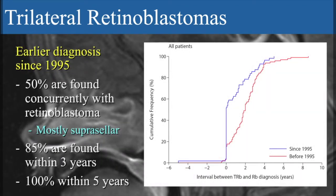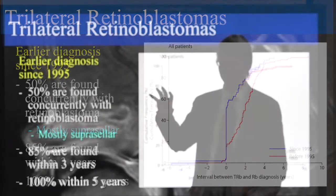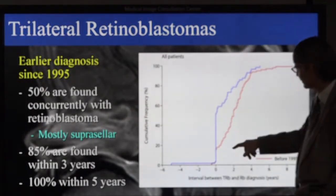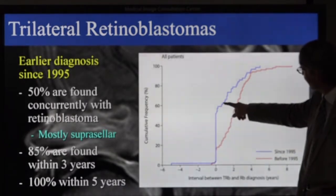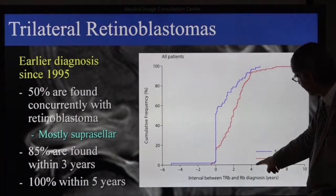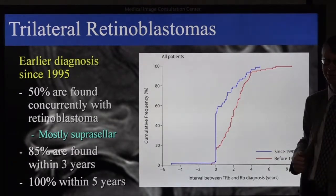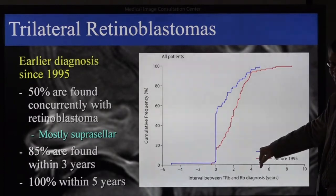When is the diagnosis made? In this analysis, we divided cases diagnosed before 1995 and after 1995, because approximately at that time people started to use high-dose chemotherapy with stem cell rescue, and MRI was routinely used at the time of diagnosis of intraocular disease. Now after 1995, 50% are found on the first MRI, and the last case is found after four and a half years. So if you wish to screen for this, there is no use screening past five years.